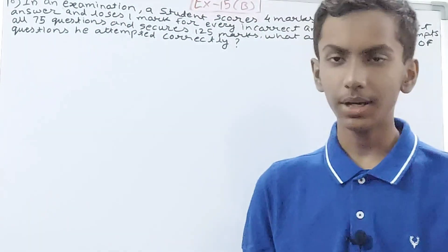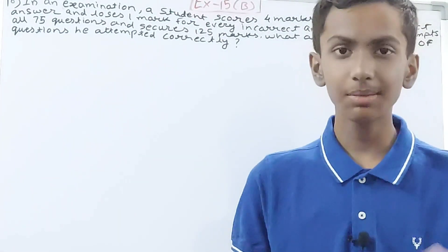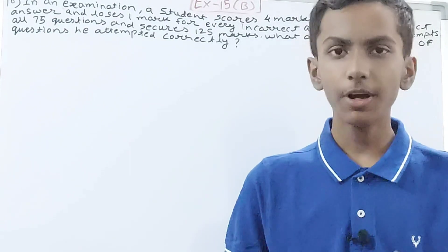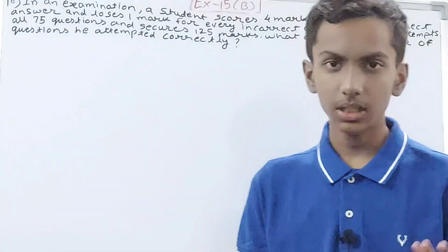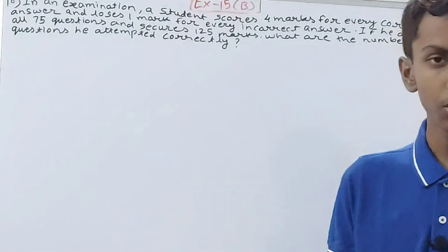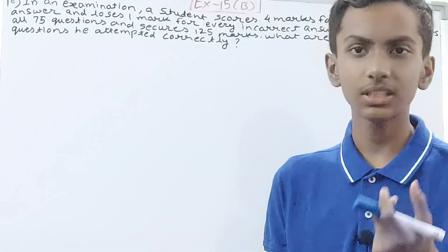Now try to understand what I'm trying to say. In some examinations, for incorrect answers you get a zero—if the answer is completely wrong, it's just zero. But if there is negative marking, then your marks are subtracted.